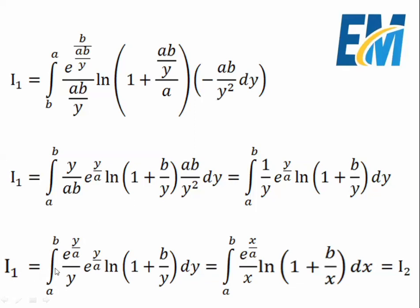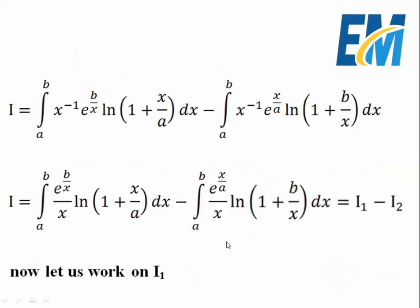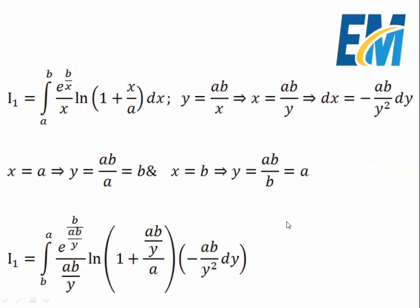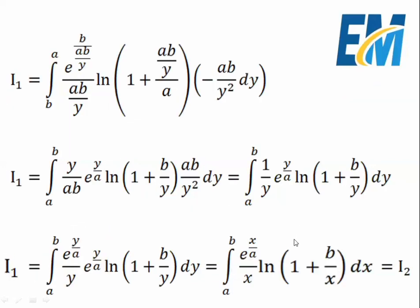So I1 equals the integral from a to b of e^(y/a) over y times ln(1 + b/y) dy. Renaming y back to x, I1 equals the integral from a to b of e^(x/a) over x times ln(1 + b/x) dx. Remark that this is exactly I2, so I1 equals I2.